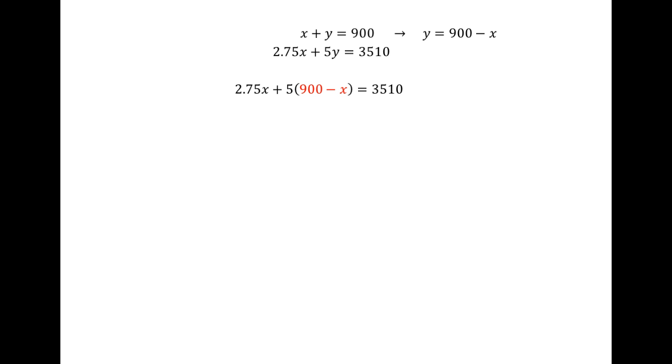Now we have two equations: x plus y equals 900, and 2.75x plus 5y equals 3510. From the first equation, we can easily isolate y, giving us y equals 900 minus x. We then use substitution, substituting that expression for y in the second equation: 2.75x plus 5 times (900 minus x) equals 3510.